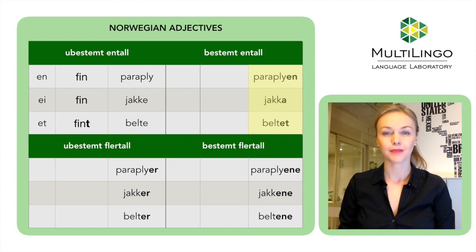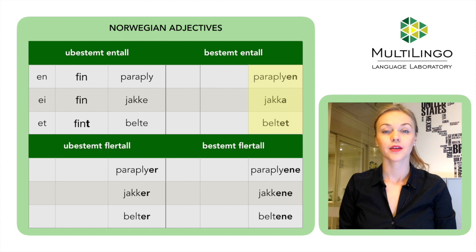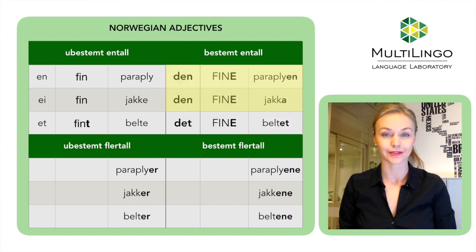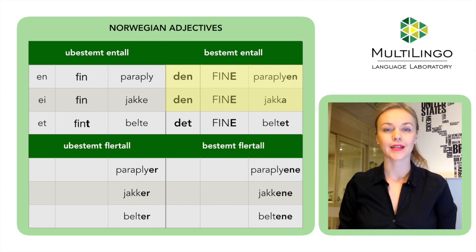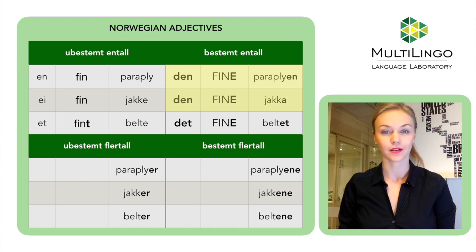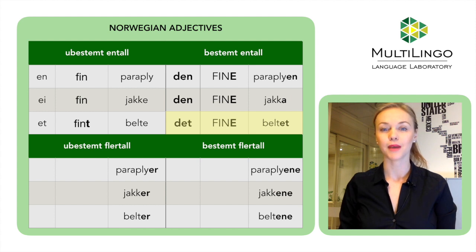Let's move on and look at definite forms. Paraplyen, jakka, beltet — the umbrella, the jacket, the belt. If I want to describe them with an adjective, the adjective must also change into definite form, and I must remember the extra article which comes together with the adjective. The adjective will take an -e ending for all three genders. It goes with 'den' for masculine and feminine: den fine paraplyen, den fine jakka. But for the neuter, it goes with 'det': det fine beltet.